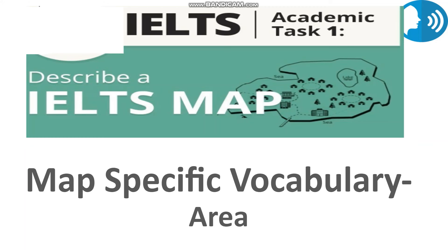Let's move to area-specific vocabulary used to describe areas. We use nouns like 'length,' 'width,' 'depth,' and 'height,' and adjectives like 'long,' 'wide,' 'deep,' and 'high' to talk about areas and sizes. For example: 'The width of the car park is around 100 meters' — you can give specific information regarding the area.